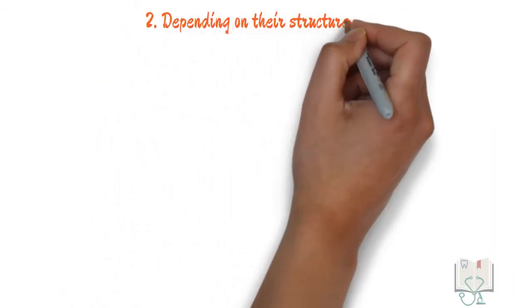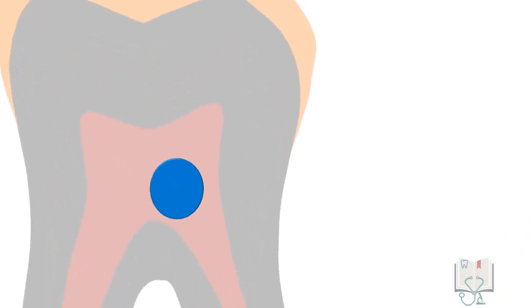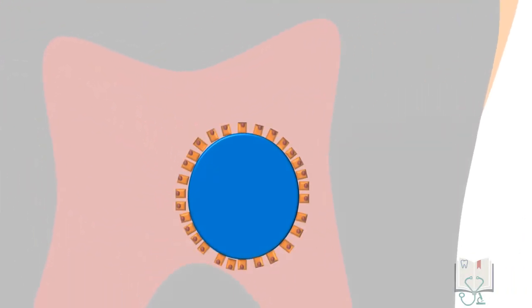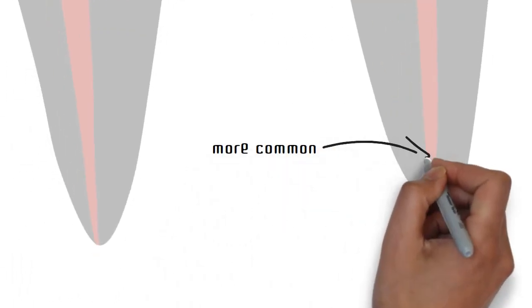Depending on their structure, pulp stones can be classified as true pulp stones when structurally similar to dentine. They have odontoblasts in the periphery, dentine tubules with odontoblastic processes running through the pulp stone. True pulp stones are more common near the root apex.